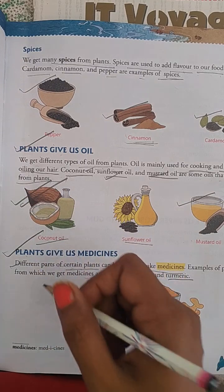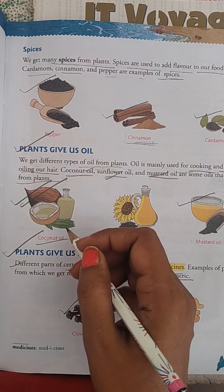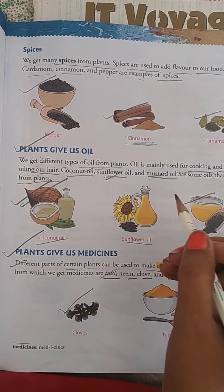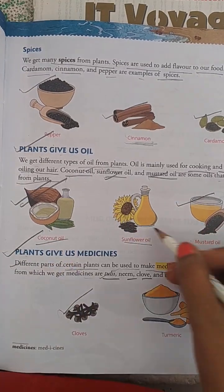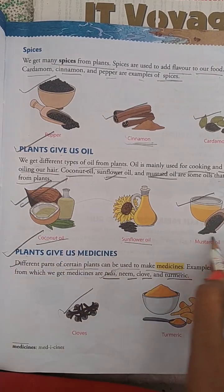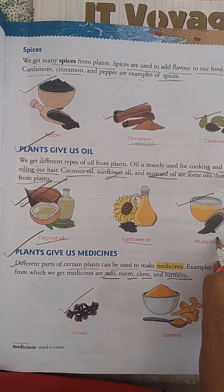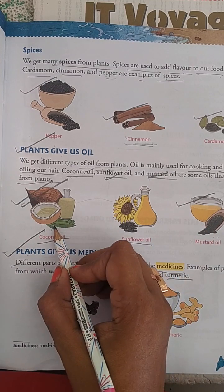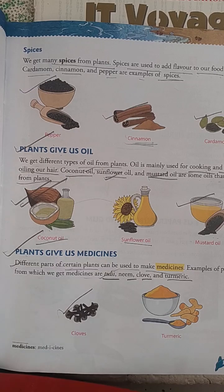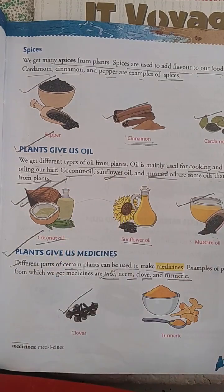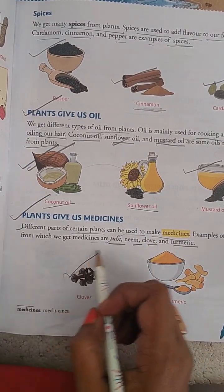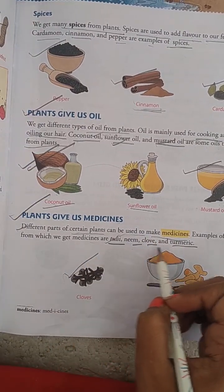Plants give us oil as well. To nourish our hair and for cooking purposes also we get oil from plants like coconut oil, sunflower oil, mustard oil. Sunflower oil and mustard oil are cooking oils. Coconut oil we used to put on our hair to keep it healthy. Plants give us medicines as well, like tulsi, neem, clove, turmeric.